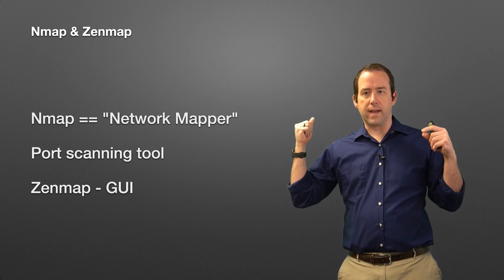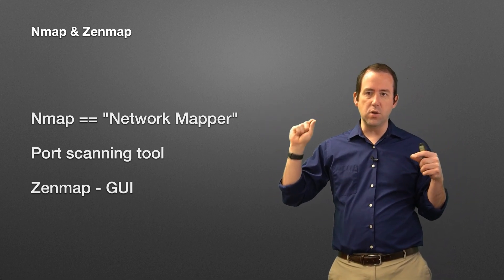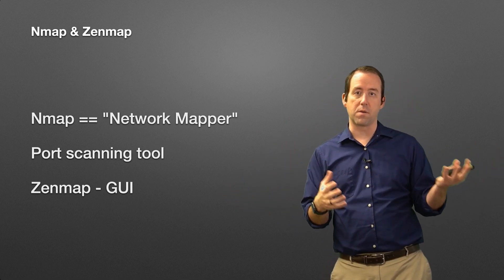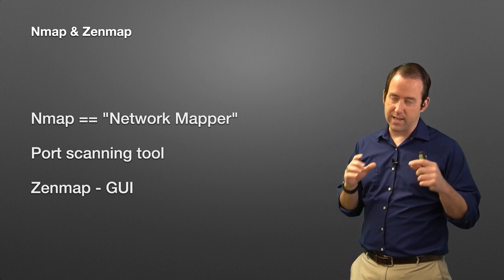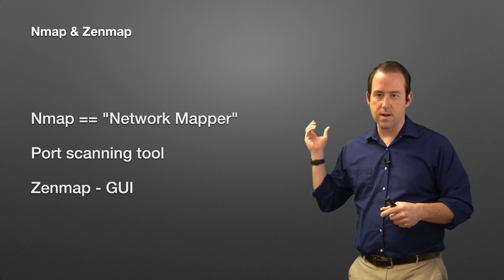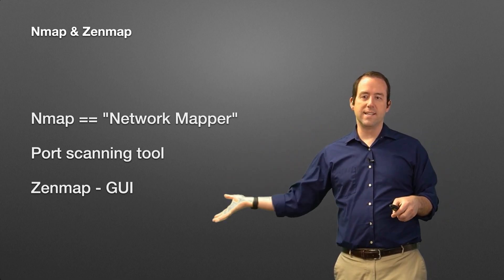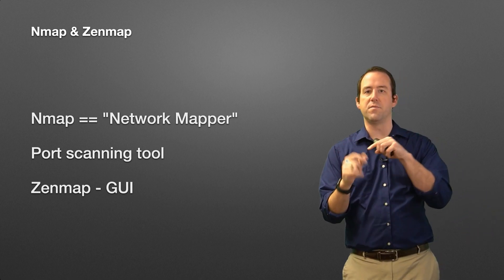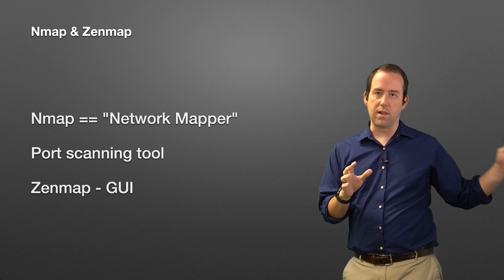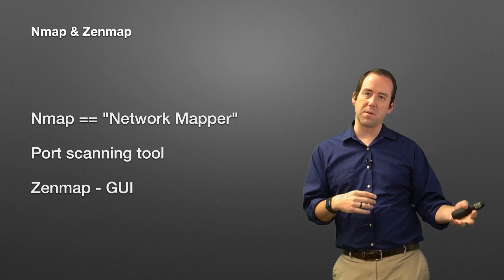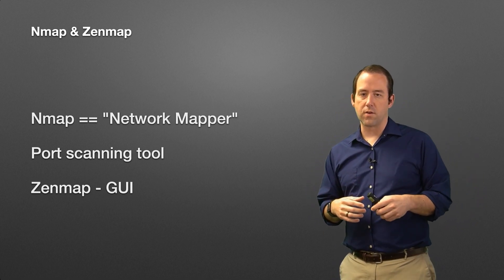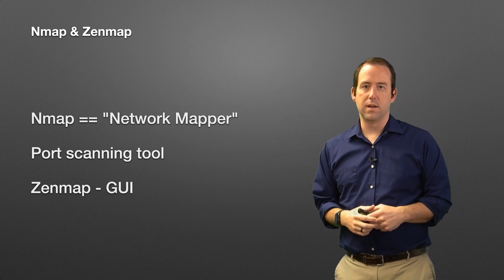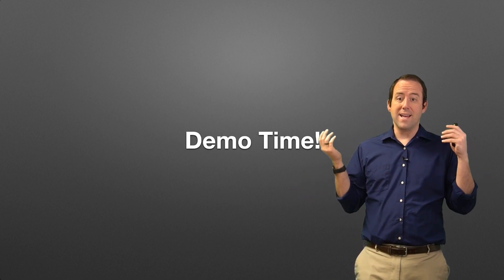Nmap itself — and we'll talk about Zenmap a little bit too. Nmap is a network mapper; that's what Nmap stands for. It's a tool to do network mapping, including port scanning, and that's just one part of what it does. Zenmap is the graphical user interface that makes it accessible. You can run Nmap entirely from the command line — if you're scanning 1000 different servers at once, maybe you want to. But for our purposes, the graphical user interface is a good way to get started.